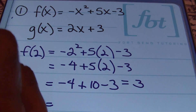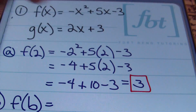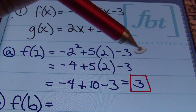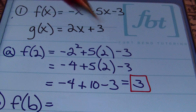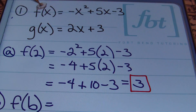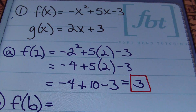And this is the result — f of 2 equals 3. In other words, you're finding the y value when x equals 2 of the function f. That's what they want you to do, and that's exactly what we just did.